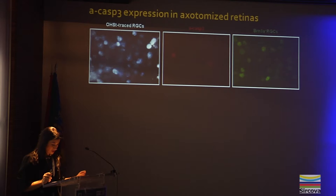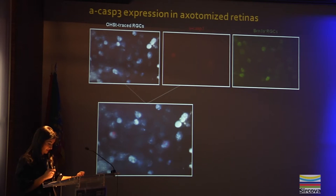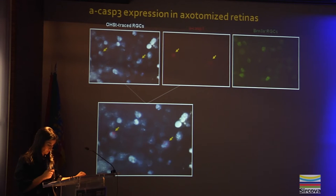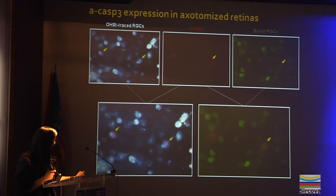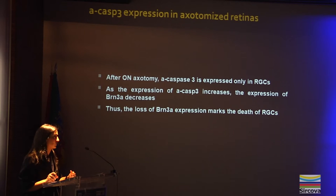In this magnification, we can observe the tracer, caspase-3, and BRN3A signal in the same frame from an axotomized retina. In this merged image, we can see that the expression of active caspase-3 always colocalized with the traced cells. So after axotomy, caspase-3 is expressed by ganglion cells. With respect to the colocalization of caspase-3 and BRN3A, when the signal of caspase-3 is low, the ganglion cells still express BRN3A. However, when the expression of caspase-3 increases, BRN3A is lost. We conclude that after optic nerve axotomy, active caspase-3 is expressed only in ganglion cells, and as active caspase-3 increases, the expression of BRN3A decreases. Thus, the loss of BRN3A expression marks the death of ganglion cells.